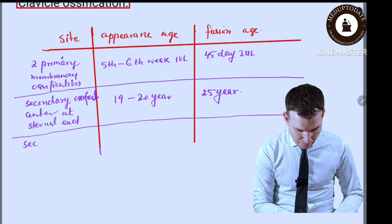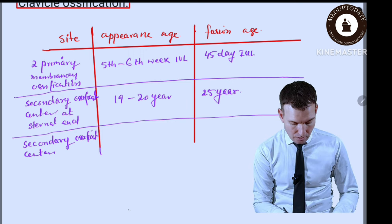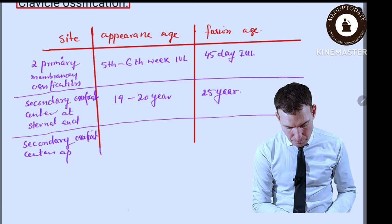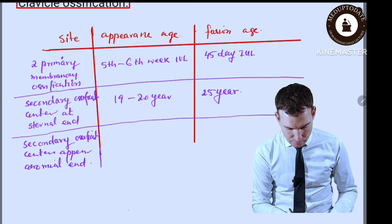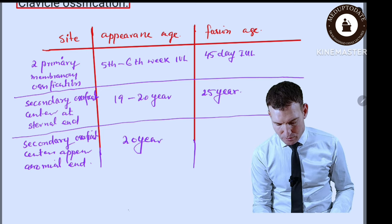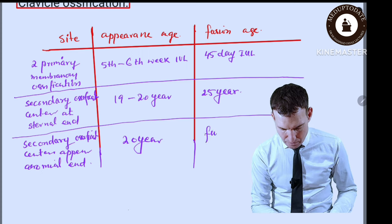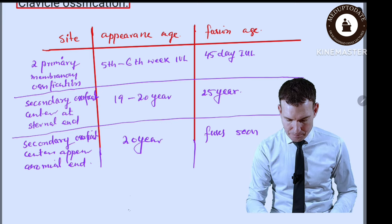A secondary ossification center occasionally appears at the acromial end also, at the age of 20 years, and it fuses very soon. The fusion age is not specifically mentioned because it appears and fuses quickly.